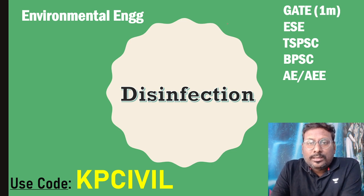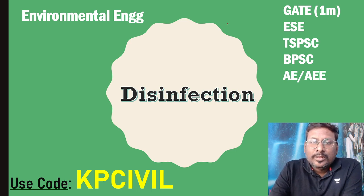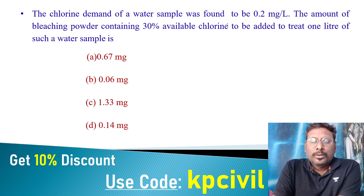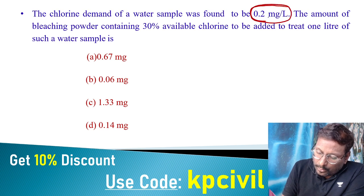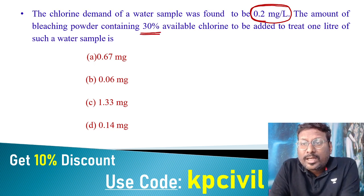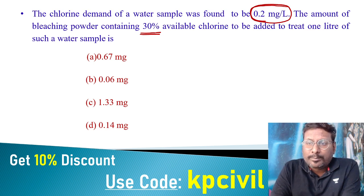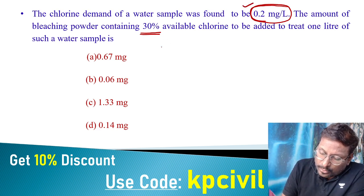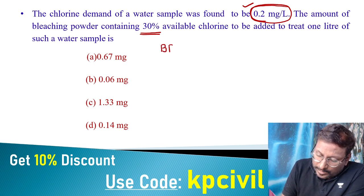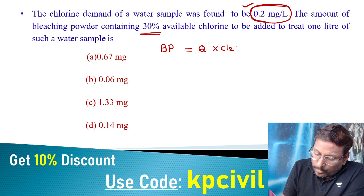We have completed field topics like sedimentation, coagulation, and filtration. Now we cover disinfection — the last method of water treatment after filtration. The chlorine demand of a water sample was found to be 0.2 mg/L. We need to find the amount of bleaching powder containing 30% available chlorine to be added to one liter of water sample. Since no residual chlorine information is given, take demand as dosage. The formula is: Bleaching powder quantity = (Discharge × Chlorine dosage × 100) / Percentage of chlorine.